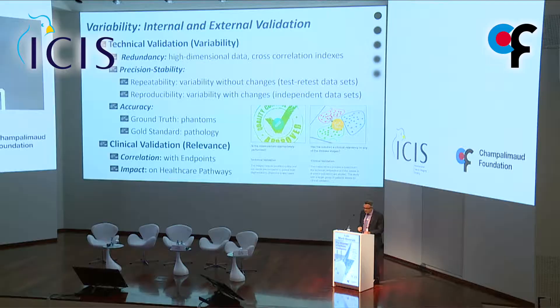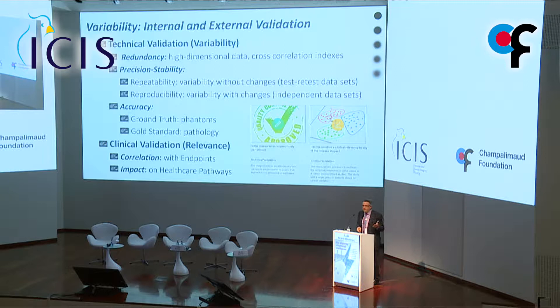We are not doing this because it is extremely difficult, mainly because of variability — variability is huge. We have to address technical validation, which means redundancy of data, precision and stability of results. That means repeatability — variability without changes, whether test-retest metrics change — and reproducibility, which is variability when we have changes: different machines, different upgrades, different numbers of detectors, different repetition times. These things introduce change in the reproducibility of our results.